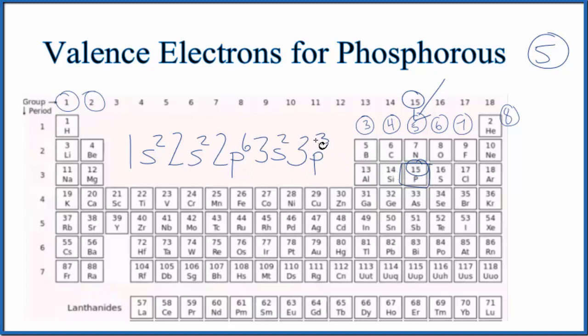We're interested in the valence electrons. Those are the electrons in the highest energy level, the third energy level. Think of it as the outer shell. So in the third energy level here, we have 2 plus 3, which equals 5 valence electrons for phosphorus.